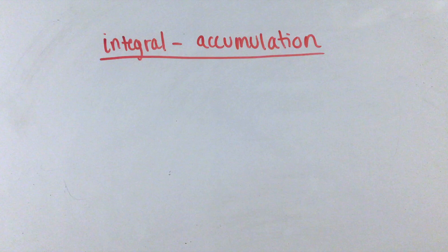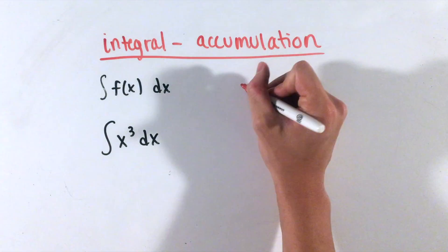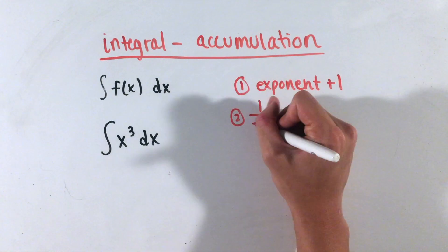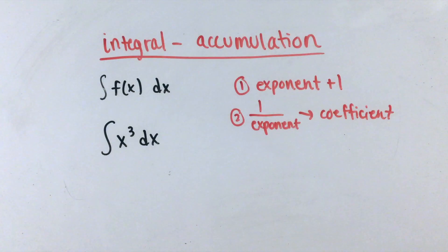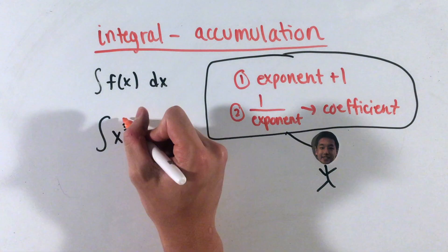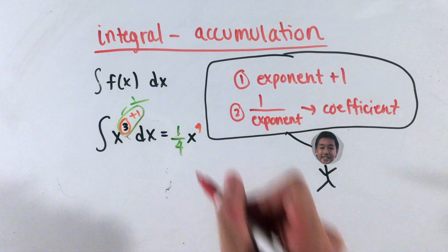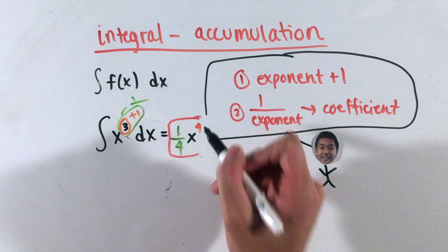Integrals measure the accumulation of a function over some variable, which is notated like this. To take the integral of a function, like x cubed, do the reverse of the derivative power rule. First, add one to the exponent, then use the reciprocal of this new exponent as the coefficient. For our example, the integral of x cubed will become 1 fourth times x to the fourth, plus a constant c.